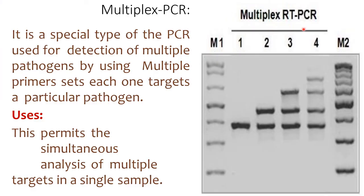Multiplex RT-PCR is a special type of PCR used for the detection of multiple pathogens by using multiple primer sets, each one targeting a particular pathogen. It permits simultaneous analysis of multiple targets in a single sample.